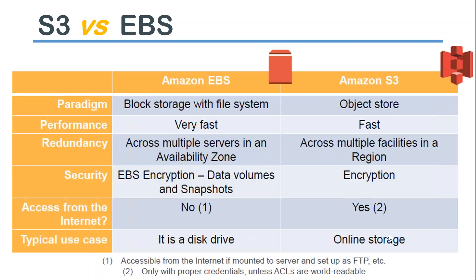A typical use case analogy: EBS is analogous to a hard disk drive, while Amazon S3 is defined as online long-term storage. That is how people view the comparative use cases of both these types of storage.